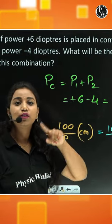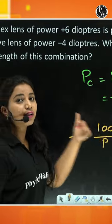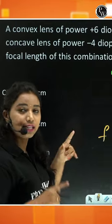Now we have to find the focal length. There are two formulas, but since the answer options are in centimeters, we'll use: focal length equals 100 divided by power in centimeters.